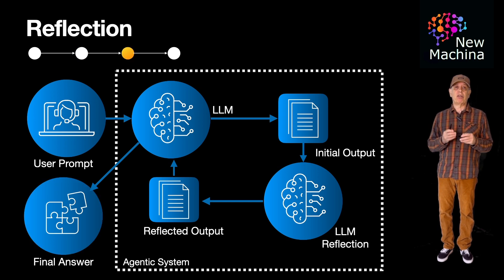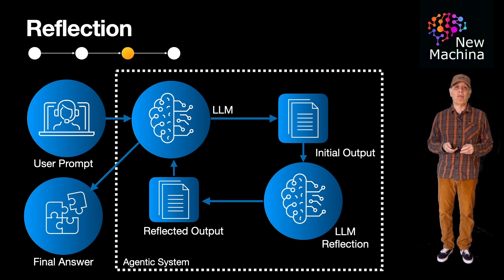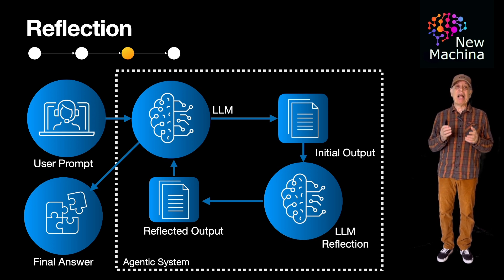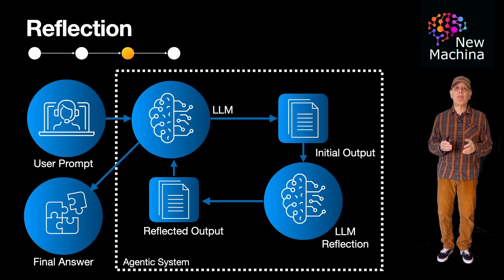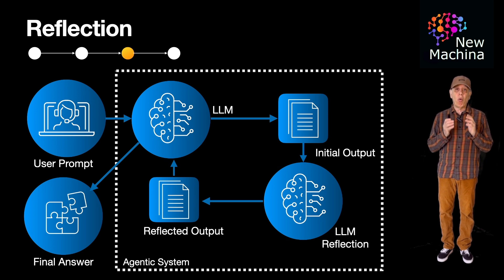So what is the benefit of reflection? Reflection improves reliability and accuracy in agentic workflows by adding a feedback loop, enabling the agent to think twice or self-correct before giving the final response to the user. You should use reflection for use cases that require high accuracy or reliability. Additionally, use cases that are complex with multiple steps can benefit from reflection, helping verify that all required steps were followed in a logical order.